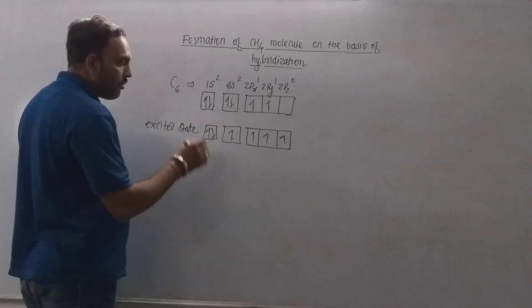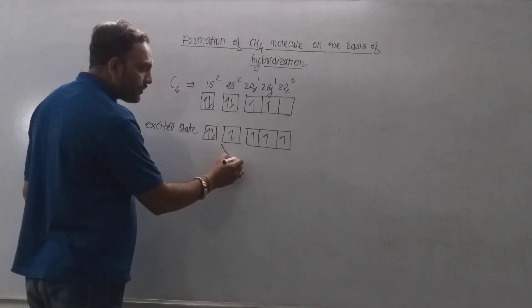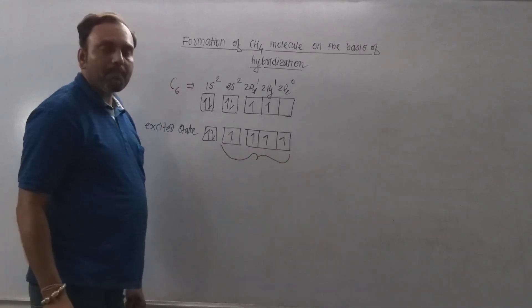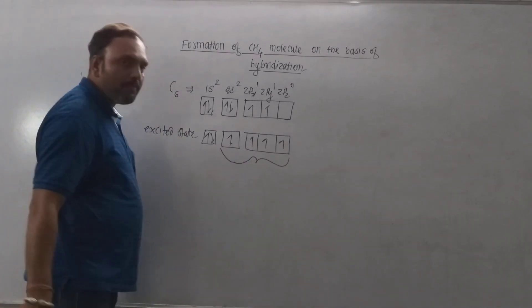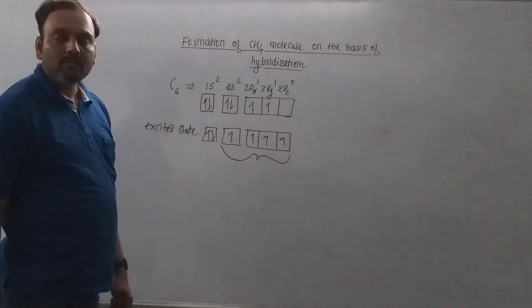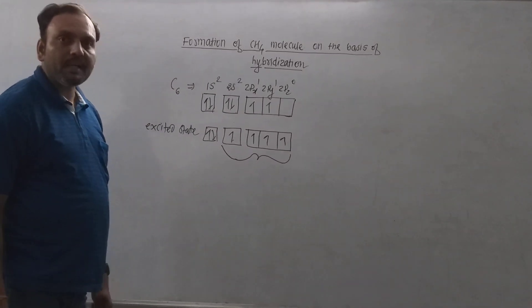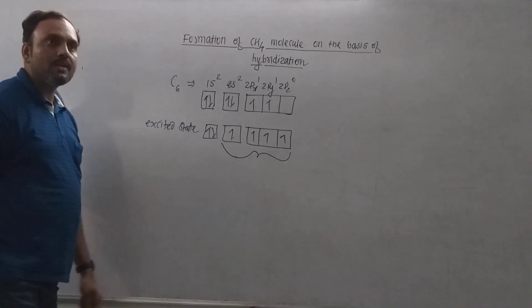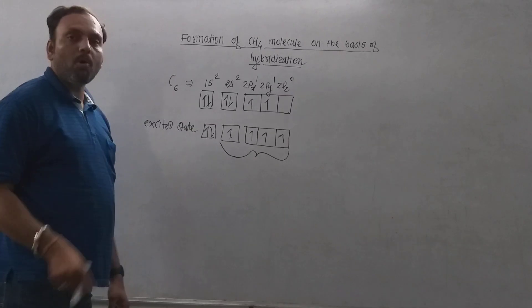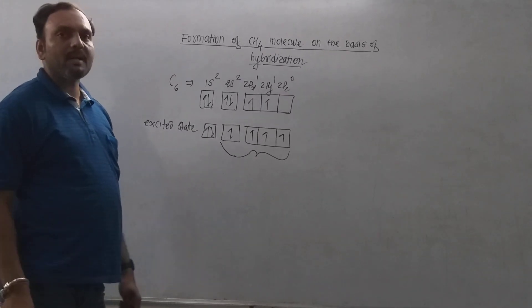Now at this stage 1s orbital and 3p orbitals of valence shell of carbon undergo hybridization which lead to the formation of 4 SP3 hybrid orbitals having maximum symmetry. So these 4 SP3 hybrid orbitals...